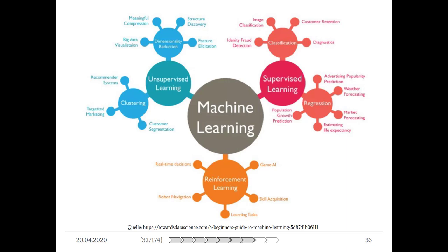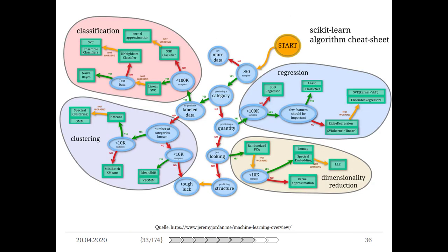Wenn Sie in der Praxis mit einem Problem konfrontiert sind, können Sie sich überlegen, in welchen dieser Bereiche es fällt, und dann die Methoden aussuchen. Es gibt von Scikit-Learn ein schönes algorithmisches Cheat-Sheet – ein Entscheidungsbaum, an dem Sie sich entlanghangeln können, um die für Ihr Problem geeignetste Methode zu finden. Beachten Sie: Unter 50 Samples sind Sie in der Standardstatistik, weit weg von fancy Begriffen. Sie brauchen in der Regel 10.000 oder mehr Datenpunkte, um Sinnvolles anfangen zu können.